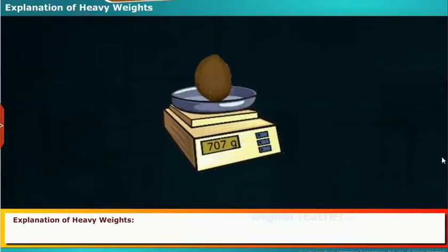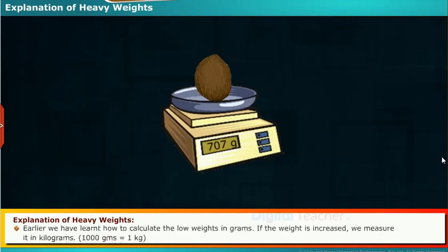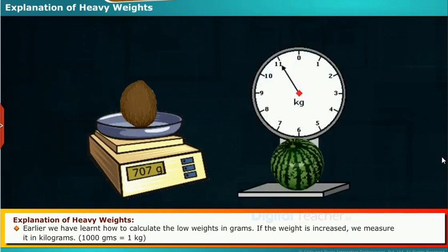Let us see examples of heavy weights. Explanation of heavy weights: Earlier we have learned how to calculate the low weights in grams. If the weight is increased, we measure it in kilograms. 1000 grams is equal to 1 kg.